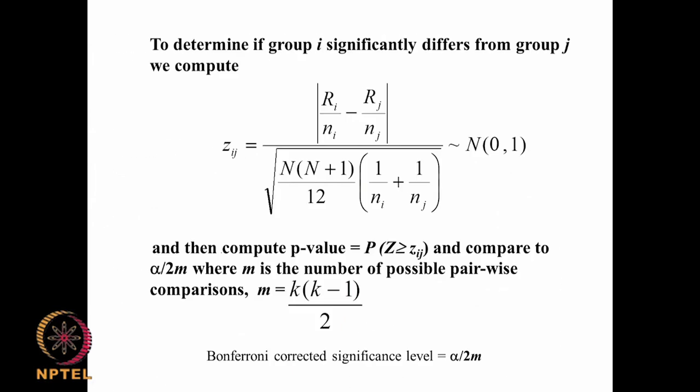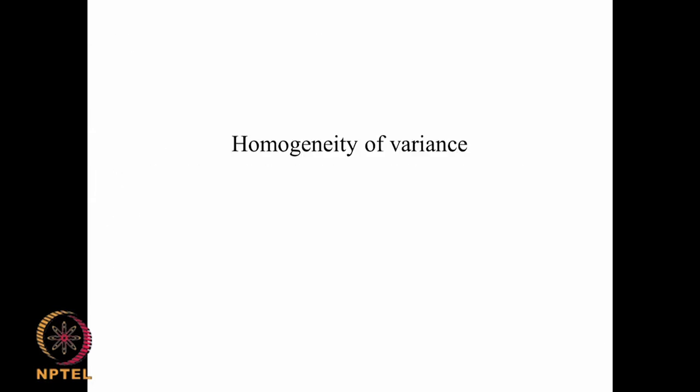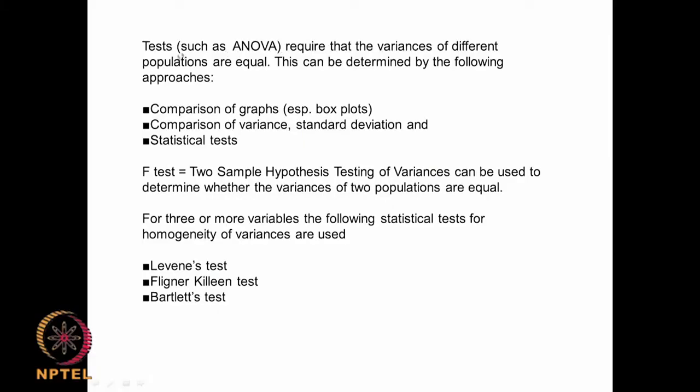There is another situation where you have a non-normal type of distribution. When comparing two or multiple sets of data, we need to check for homogeneity of variance — that is very important. ANOVA requires that the variances of different populations are equal. If they do not satisfy homogeneity of variance, we need to use some other type of test. We can check this graphically using a box plot, or by comparing variances and standard deviations, or by doing statistical tests like the F test.